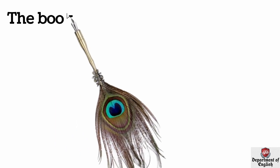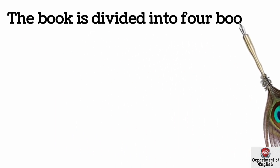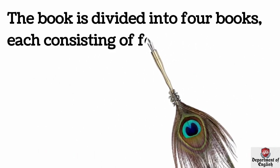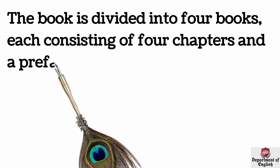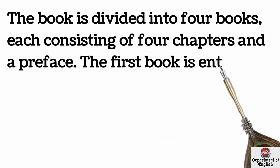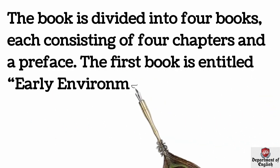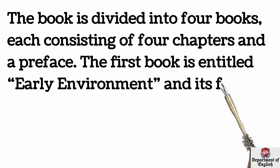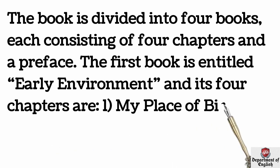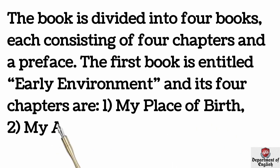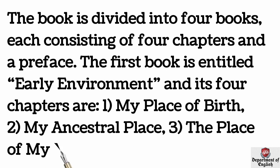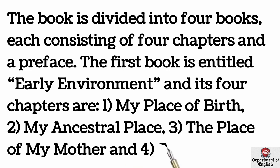The book is divided into four books, each consisting of four chapters and a preface. The first book is entitled Early Environment, and its four chapters are: 1. My Place of Birth, 2. My Ancestral Place, 3. The Place of My Mother, and 4. England.